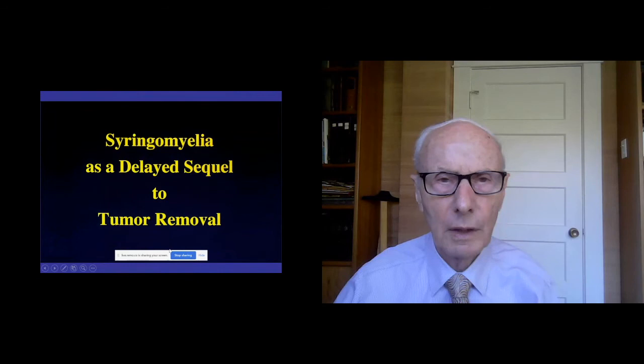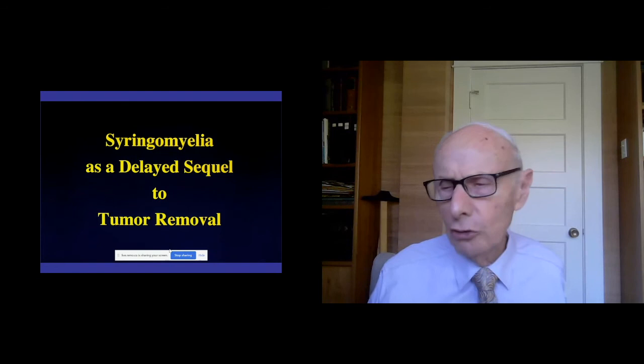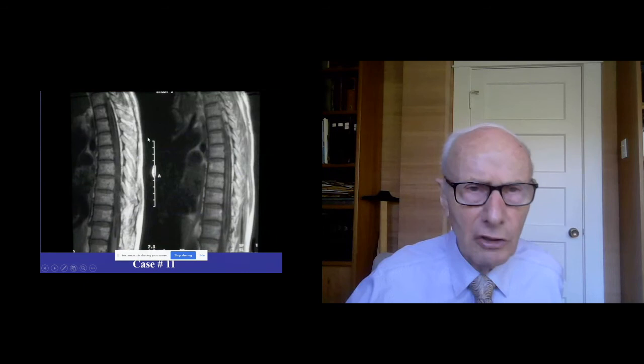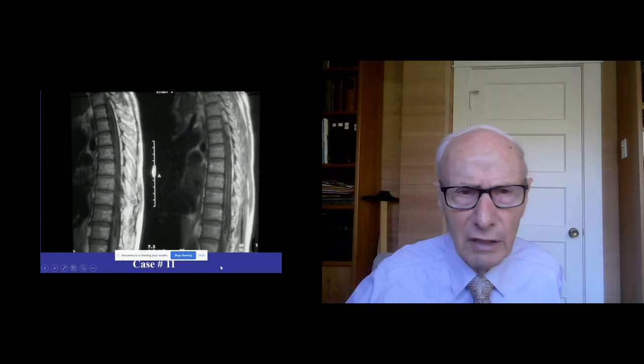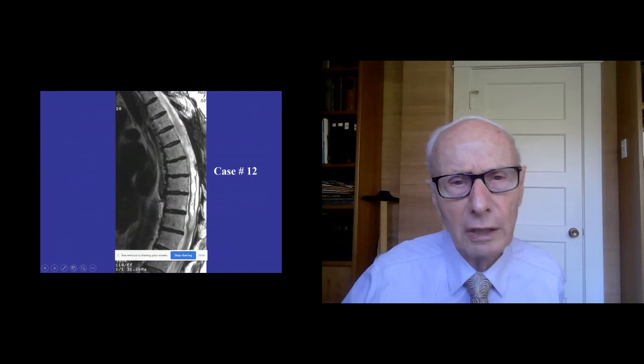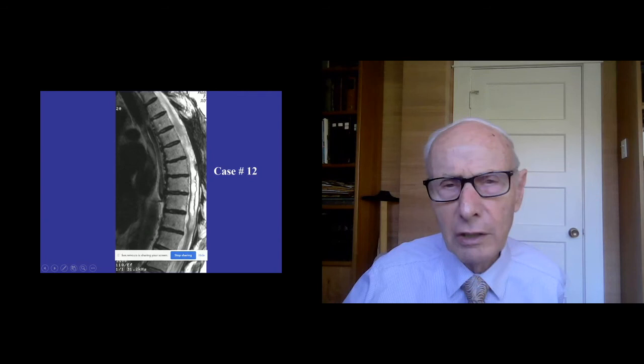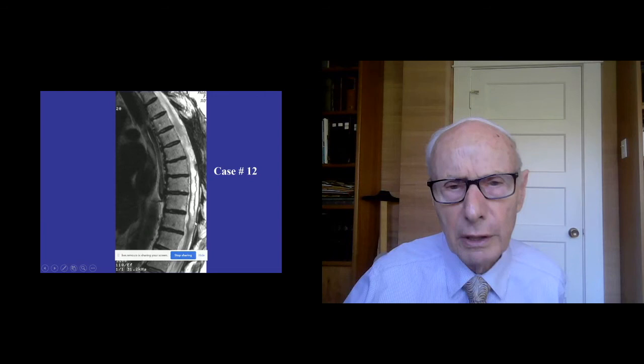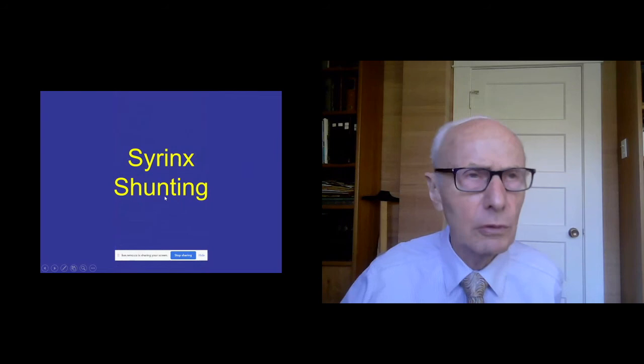Syringomyelia can form as a delayed consequence of scar tissue when a tumor has been removed. Here is such an instance where the syrinx cavity developed in the area of the tumor resection, with dense scar tissue adherent to the cord. Sometimes it is very difficult — you cannot safely remove scar that is this adherent, and the only option is to shunt. Here is another diffuse situation with scar tissue over a wide area forming an irregular syrinx with another adhesion, where the only option is to shunt the syrinx.